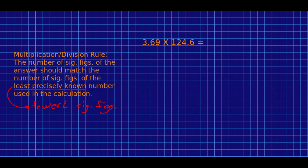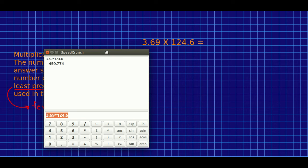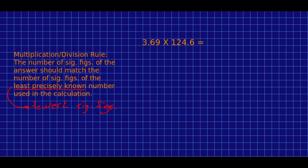So let's do this calculation, 3.69 times 124.6. And the calculator says, 459.774. Okay, now what? Well, our least precisely known number is here. It only has three sig figs, this one has four, and so we need to round our answer to three sig figs. Everything after that is junk. So we will now round correctly. 459.7 is going to round to 460. And, you know, that's a little unclear, right? Is that zero a sig fig? Well, we know it is, but does our reader? So it would be better to write it as 4.60 times 10 to the 2.